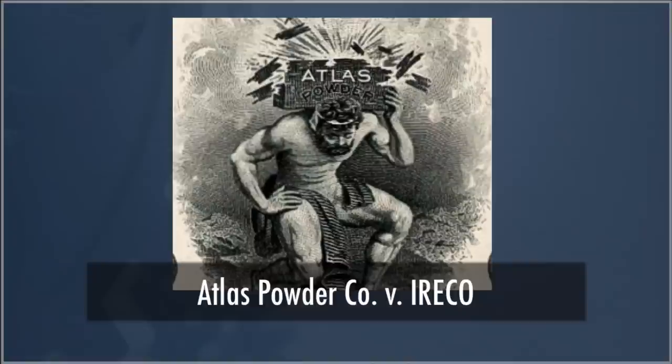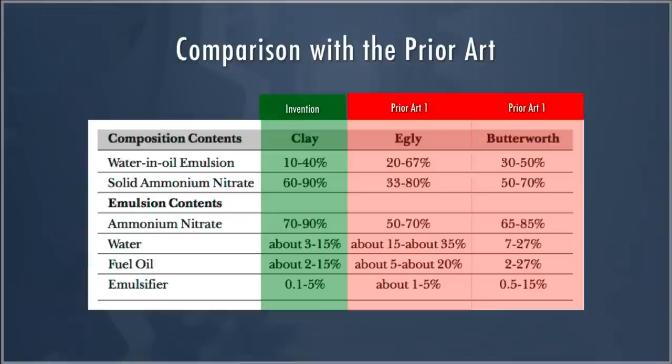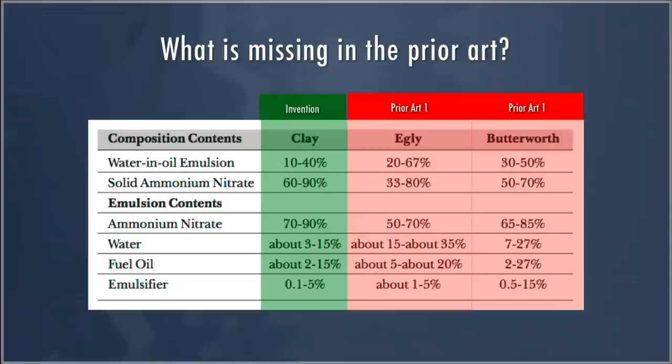The Atlas Powder case dealt with explosives. The composition of the claim is shown in the green boxes, and there are two pieces of prior art the district court found to each be an anticipating reference. All of the pieces of the prior art appear to be in the invention — the invention doesn't seem to add anything significant to the prior art in any way. So the question is: what is missing in the prior art?